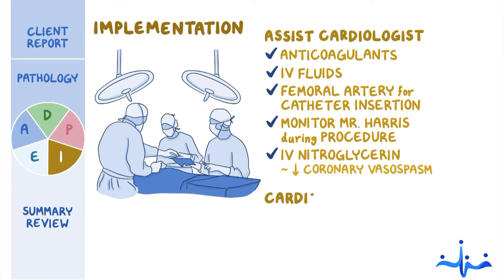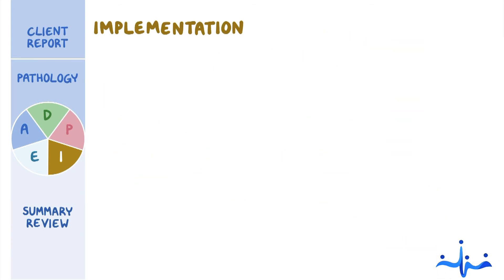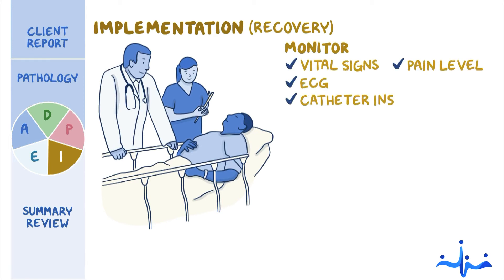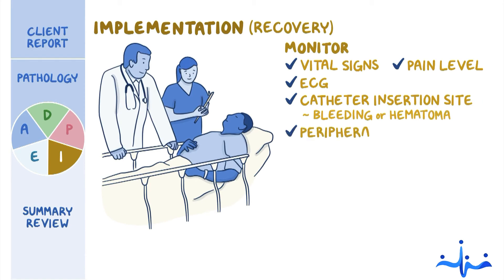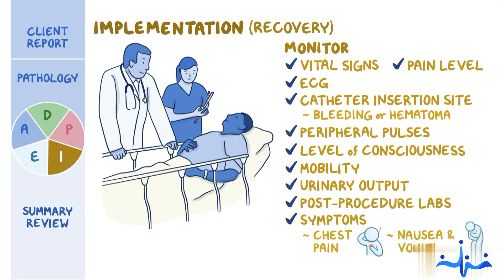The cardiologist successfully completes the PCI with a balloon catheter and stent placement. During Mr. Harris' recovery, you monitor his vital signs, pain level, ECG, catheter insertion site for bleeding or hematoma, peripheral pulses, level of consciousness, mobility, urinary output, and post-procedure labs, as well as symptoms such as chest pain, nausea, and vomiting.